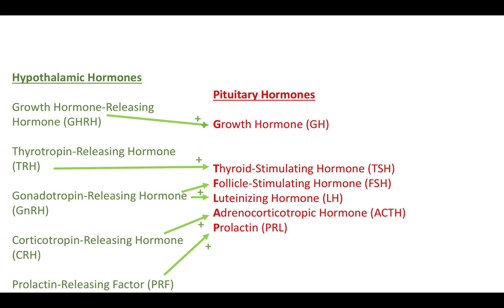There's also thyrotropin-releasing hormone, gonadotropin-releasing hormone, corticotropin-releasing hormone, and prolactin-releasing factor. One thing to note is that gonadotropin-releasing hormone stimulates the release of two hormones from the anterior pituitary: follicle-stimulating hormone and luteinizing hormone.